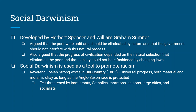This idea of Social Darwinism was actually used as a tool to promote racism. A gentleman from the time period named Reverend Josiah Strong wrote a book in 1885 called 'Our Country,' where he said universal progress — moving forward and improving yourself — is okay as long as white Anglo-Saxons remain at the top of society. Social Darwinists felt threatened by immigration, Catholics, Mormons, drinking, socialists, pretty much anything that could upend or change society.